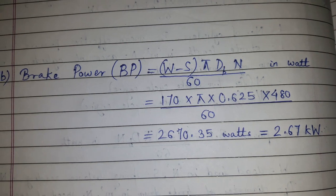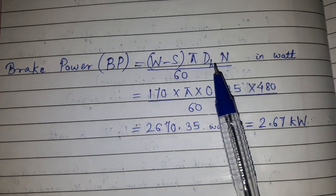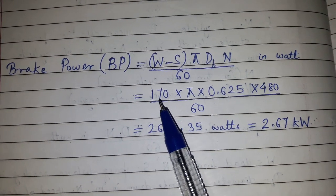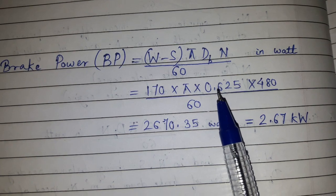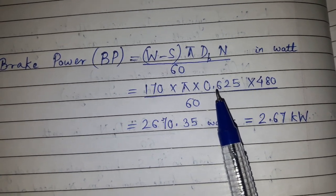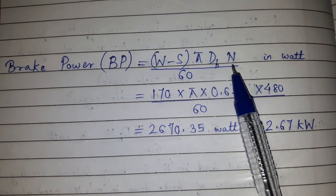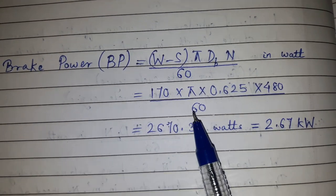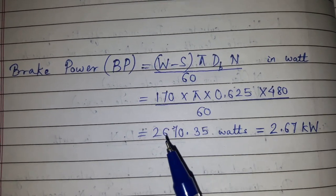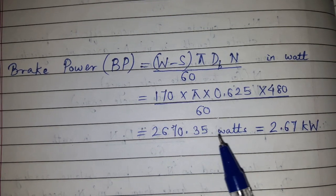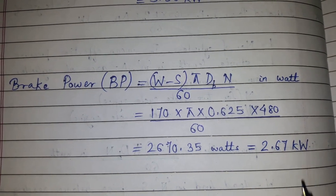Next, we calculate brake power using the formula: BP = (W − S) × π × dB × N / 60. Substituting: W − S = 170 N, dB = 0.625 m, N = 480 RPM. This gives 2670.35 W, which converted to kilowatts is 2.67 kW.